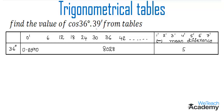We look at the horizontal row against 36 degrees and need the value for 39 minutes. Since we don't find the exact intersection, we look for the nearest approximation in the minutes column, which is 36 minutes. We note this value and also note that for cosine we will subtract the mean difference.